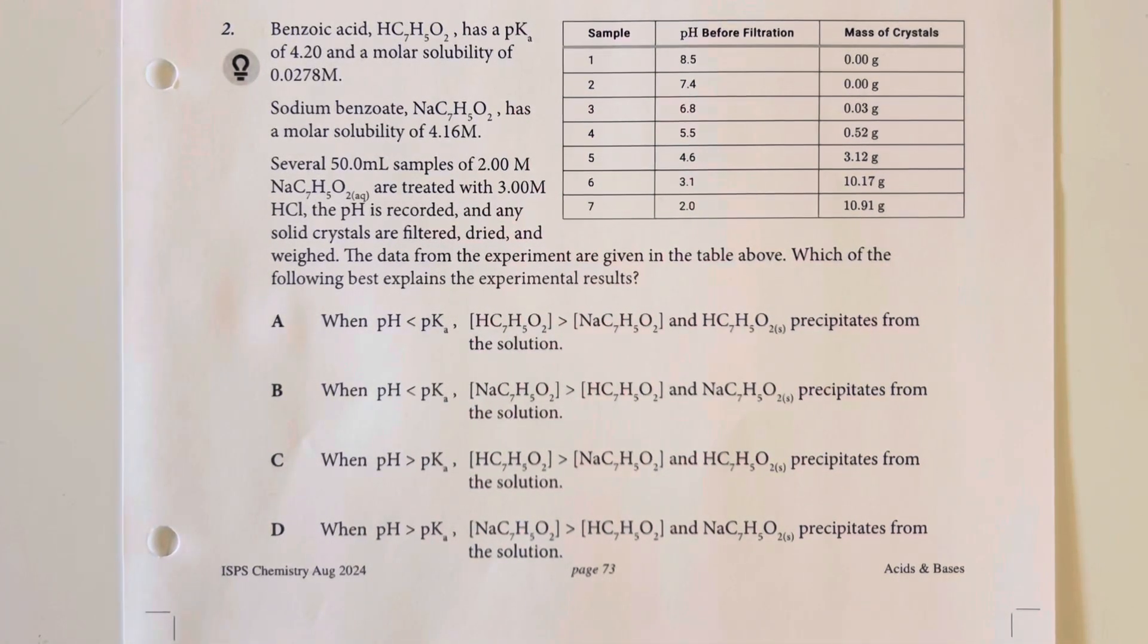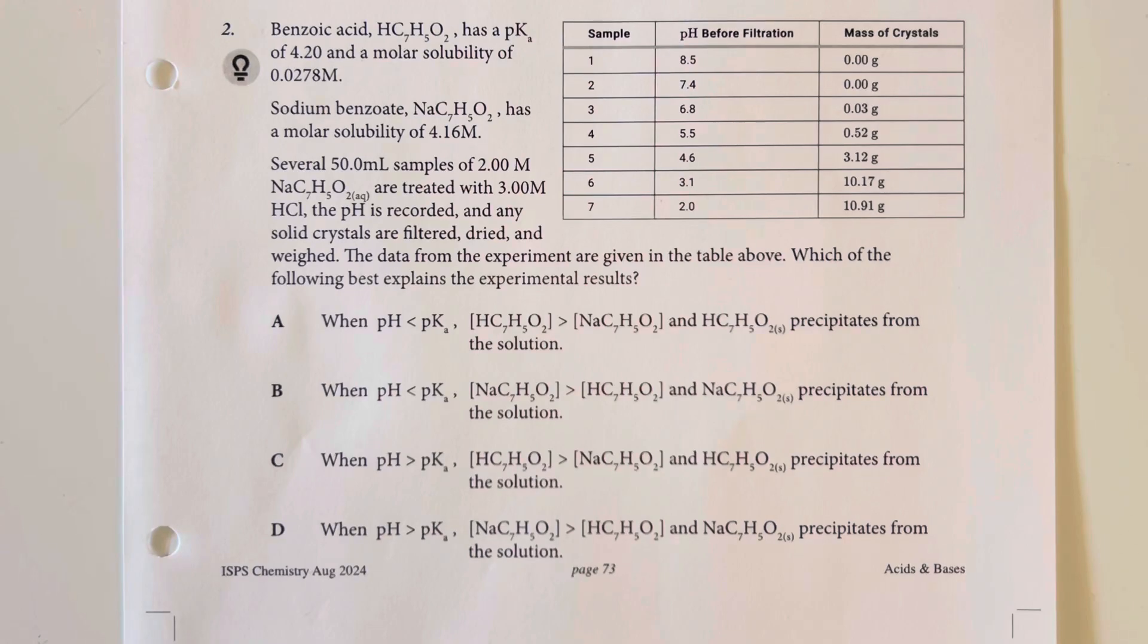Benzoic acid has a pKa of 4.2 and a molar solubility of 0.0278 molar. Sodium benzoate has a molar solubility of 4.16 molar. Several 50 milliliter samples of 2 molar sodium benzoate are treated with 3 molar hydrochloric acid solution. The pH is recorded and any solid crystals are filtered, dried, and weighed. The data from the experiment are given in the table above. Which of the following best describes the experimental results?